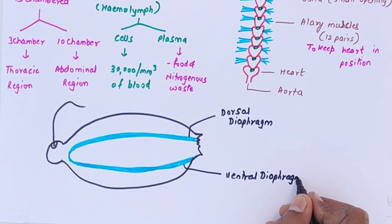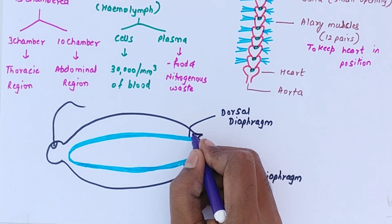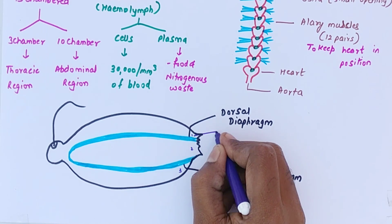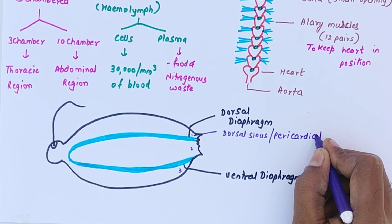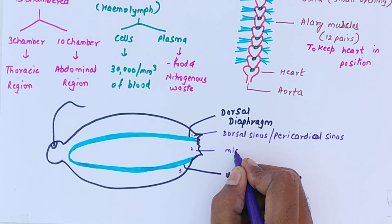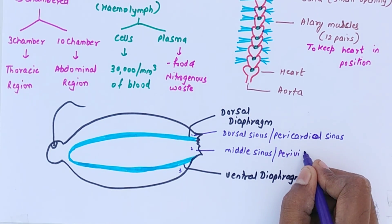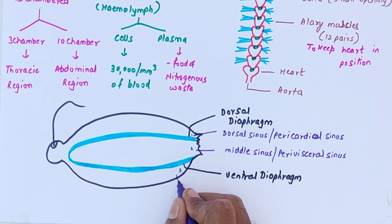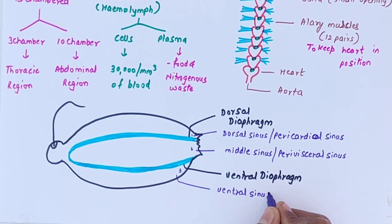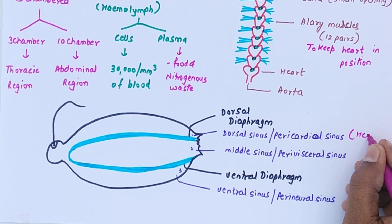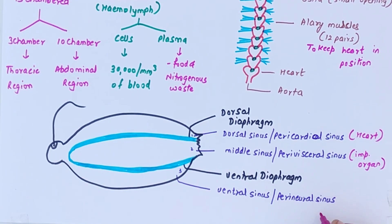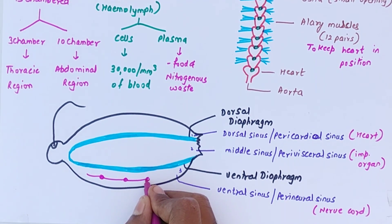The dorsal diaphragm and the ventral diaphragm result in the formation of three chambers. The upper chamber is called the pericardial sinus, or dorsal sinus, and it contains the heart. The middle one is called the perivisceral sinus, which contains all the important organs like the digestive system. The third one is the ventral sinus, also called perineural sinus, where the nerve cord of the cockroach is present.